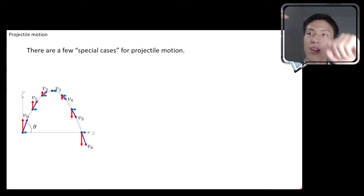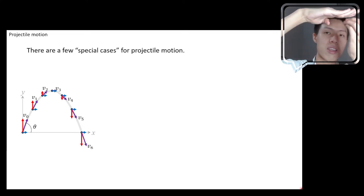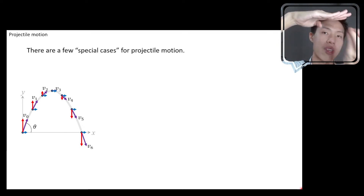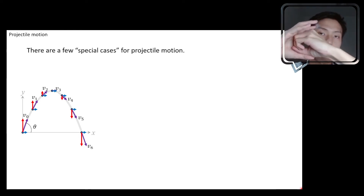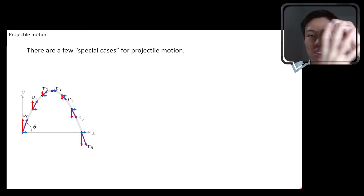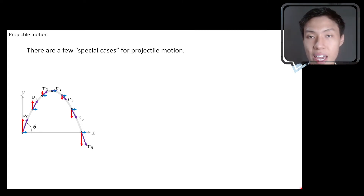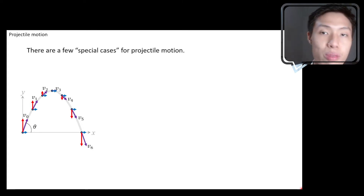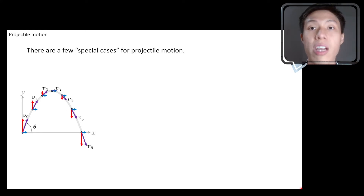If you have an aeroplane flying across the sky and suddenly drop something from it — say, a parcel — then before that, the aeroplane is touching the parcel, so there are other forces acting on it. But the moment the parcel drops from the aeroplane, there's only the parcel in the air with nothing touching it, so the only force acting on it is gravity. When the parcel is flying through the air, it's also a projectile motion. There are many ways to start a projectile motion.